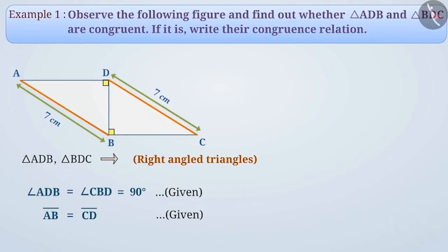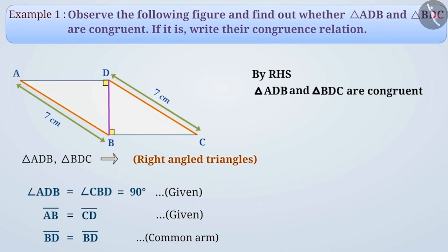Absolutely correct. The side BD in both these triangles is common. That is, BD is equal to BD shows us that the hypotenuse of these two right-angled triangles is equal and one arm is equal. So, here we can say that triangle ADB and triangle BDC are congruent with the RHS theorem.